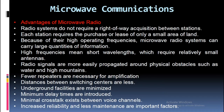Advantages of microwave radio: Radio systems do not require a right-of-way acquisition between stations. Each station requires the purchase or lease of only a small area of land. Because of their high operating frequencies, microwave radio systems can carry large quantities of information. High frequencies mean short wavelengths, which require relatively small antennas. Radio signals are more easily propagated around physical obstacles such as water and high mountains. Fewer repeaters are necessary for amplification, distances between switching centers are less, underground facilities are minimized, minimum delay times are introduced, minimal cross-talk exists between voice channels, and increased reliability and less maintenance are important factors.